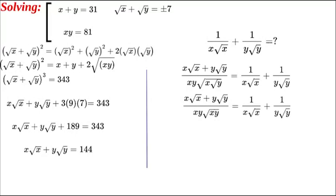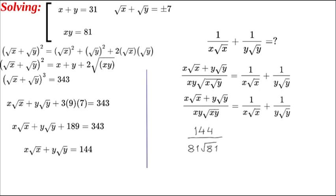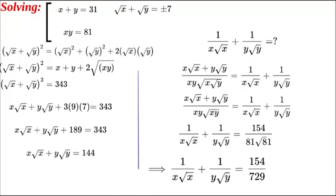All we have to do now is substitute our values. The numerator is 144 — wait, 154 — and the denominator is xy times √(xy), which is 81 times the square root of 81, giving 81 times 9 equals 729. So our final result for 1 over x√x plus 1 over y√y is 154 over 729.